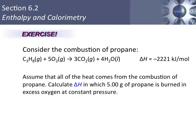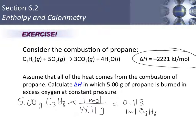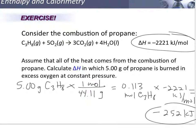Let's take a look at this sample problem: the combustion of propane, with an enthalpy change of negative 2,221 kilojoules per mole. We'd like to calculate the enthalpy change delta H if 5 grams of propane is burned in excess oxygen at constant pressure. Converting 5 grams to moles gives 0.113 moles of C₃H₈. Multiplying by negative 2,221 kJ/mol gives negative 252 kilojoules.